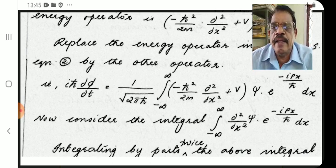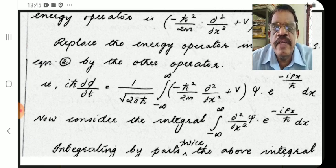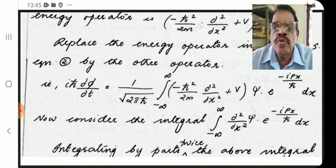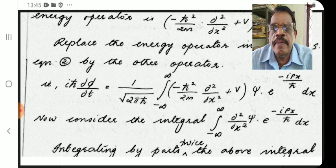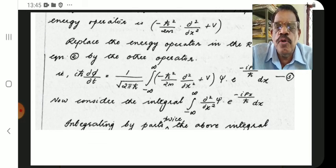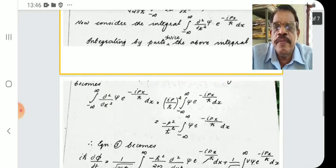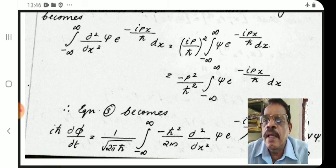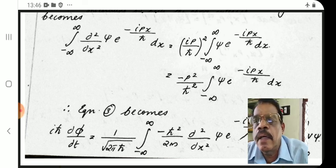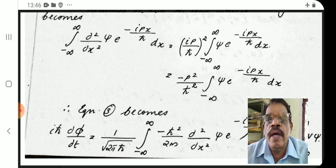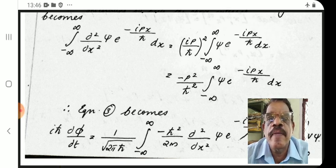Now consider our integral. It equals: ∫₋∞^∞ (∂²ψ/∂x²) e^(−ipx/h-bar) dx. Integrating by parts twice using the uv-dash formula, we get: ∫₋∞^∞ (∂²ψ/∂x²) e^(−ipx/h-bar) dx = (ip/h-bar)² ∫₋∞^∞ ψ e^(−ipx/h-bar) dx.